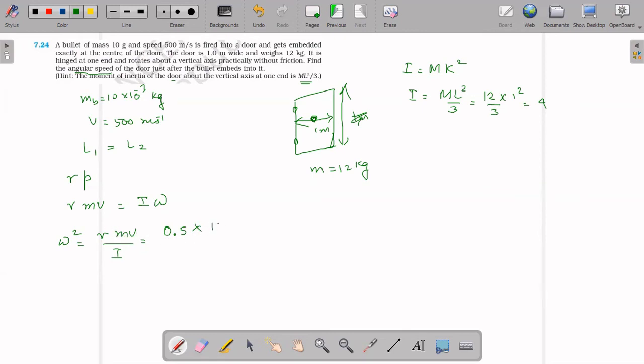12 kg, 10 into 10 to the power of minus 3, velocity 500, 5 into 10 to the power of 2, by...